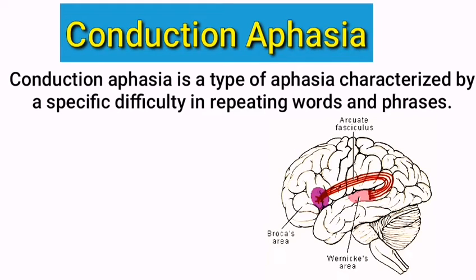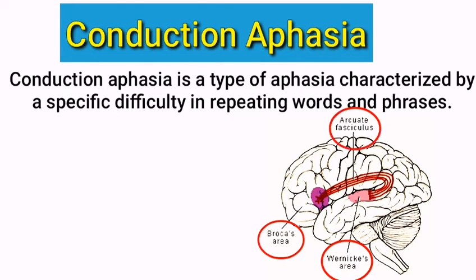Just look at this picture. Basically, one is Broca's area and the next is Wernicke's area, and between these two areas there is a bundle of nerve fibers — this is called the arcuate fasciculus. When this bundle of nerve fibers is damaged, a language disorder occurs, and this kind of disorder is called Conduction Aphasia.